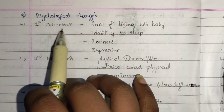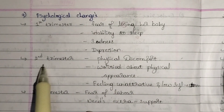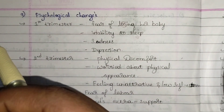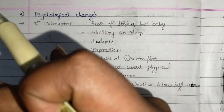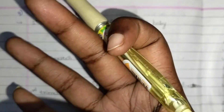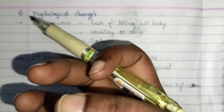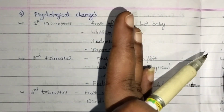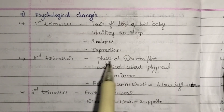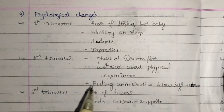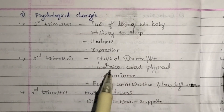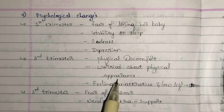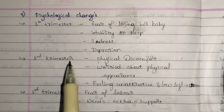In the second trimester, there will be physical discomfort. Day by day the uterus will be expanding and the baby will be growing, and the bump will be getting out. They'll feel very uncomfortable and even feel less attractive — their self-esteem will be reduced and they'll be worried about their physical appearance.